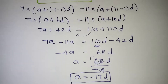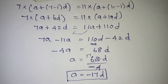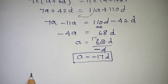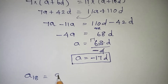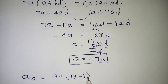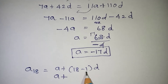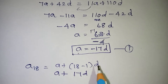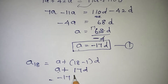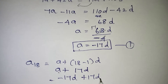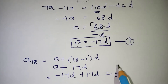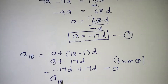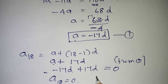Now let's use this to prove what we need. Find A18 using the formula: A18 = A + (18 - 1)D = A + 17D. Substituting equation 1, A = -17D: A18 = -17D + 17D = 0. Hence proved — the 18th term of the given AP is 0.